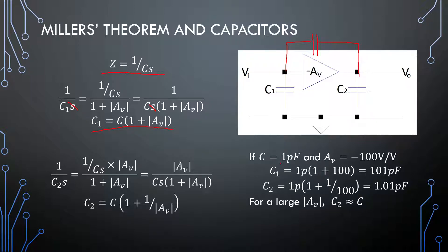So if we would place this in some form of a problem, if our original capacitor is 1 pF and we have a gain of 100 volts per volt, our C1 will be 101 pF, and C2 will be approximately 1 pF.